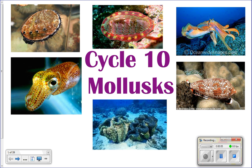Cycle 10: Mollusks. Mollusks include lots of different things. We've got chitons — chitons are this picture up at the top. You've got abalone, squid, clams, snails, cuttlefish. Lots of different things that are found in phylum Mollusca.